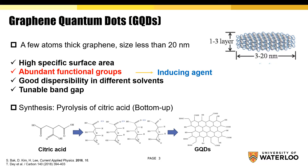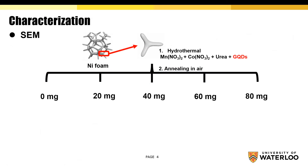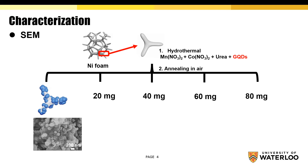Firstly, I synthesized the GQDs starting from citric acid. Then different amounts of GQDs are added into the precursors of metal oxide to form a composite.